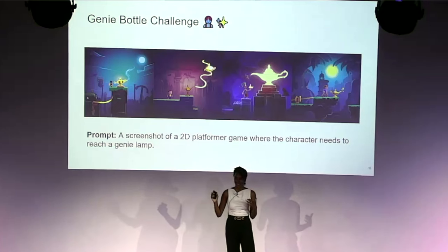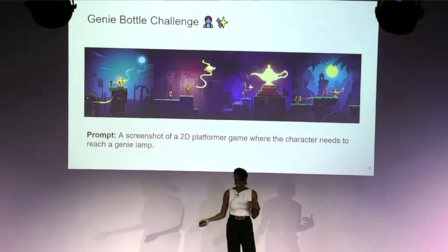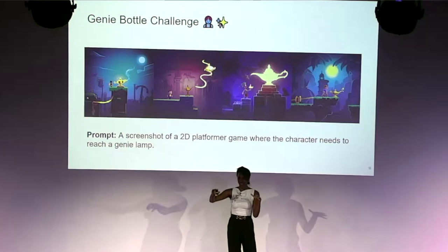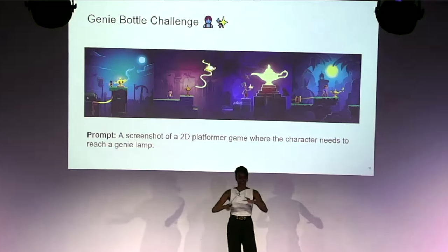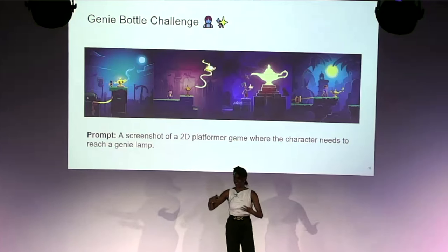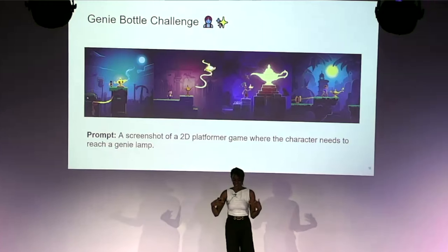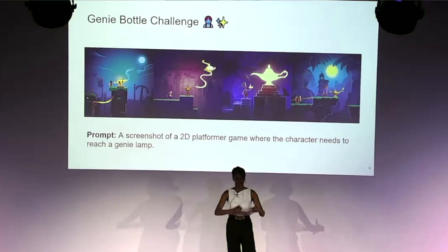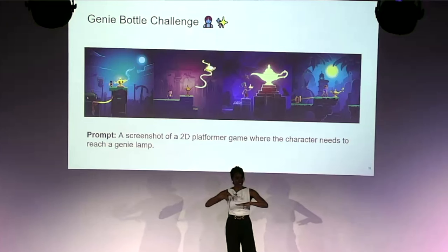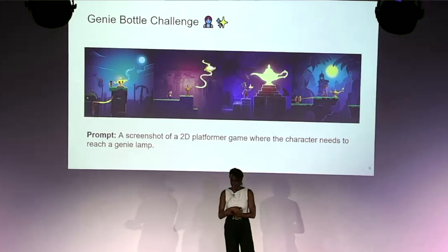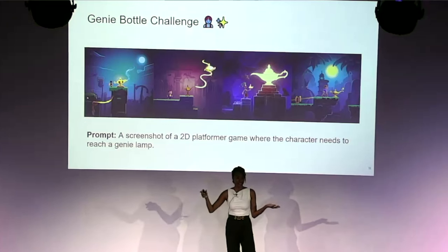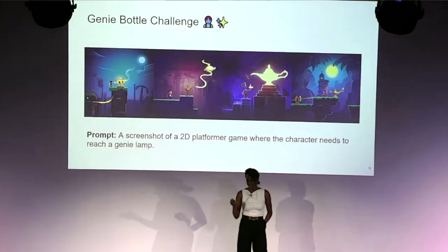Every month we held what we called the Genie Bottle Challenge: we'd generate an image of a character that needed to reach a Genie Lamp using a text-to-image model, plug it into Genie, then play the environment and try to actually reach the bottle. Over time, we started seeing real improvement — initially results were really bad, but the latent actions became increasingly consistent. It turned out much of this improvement was due to scale.